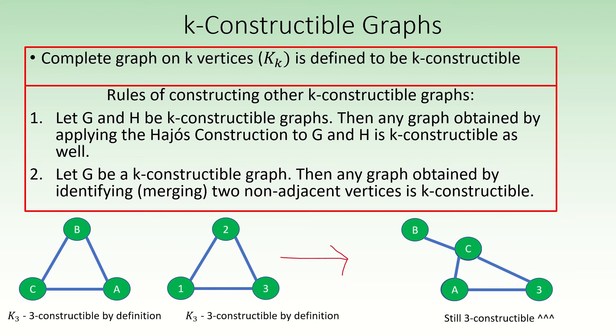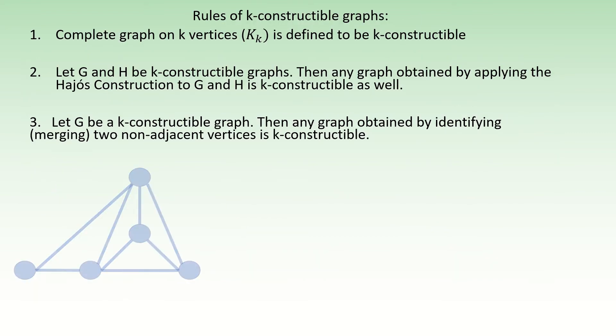To build any k-constructible graph, you always start with two complete graphs on k vertices, and then apply the allowed operations until you get your k-constructible graph. This is a four-constructible graph. For fun, I'd like to quickly show you how this was constructed using our allowed operations.